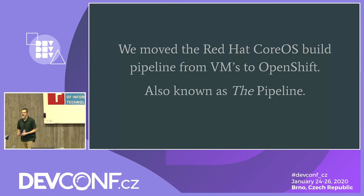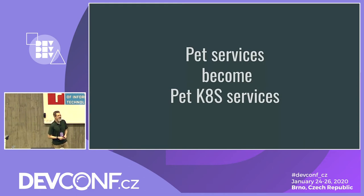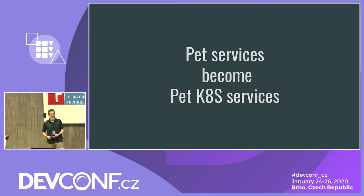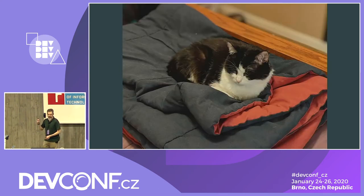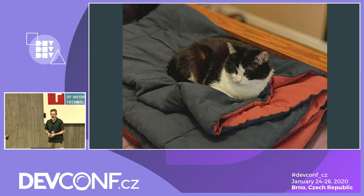Part of our problem when we started was that we referred to it as 'the pipeline' — that one word should have been our warning that we were dealing with something that had an identity. It told us we had a pet. We started hearing this phrase in Kubernetes that pet services are bad, and if you try to move a pet service it's going to become a Kubernetes pet service. My wife was texting me pictures of our cat — that is the end of our bed and that is her blanket. Mia is a delightful 13-year-old cat who really hates it when her environment is disturbed.